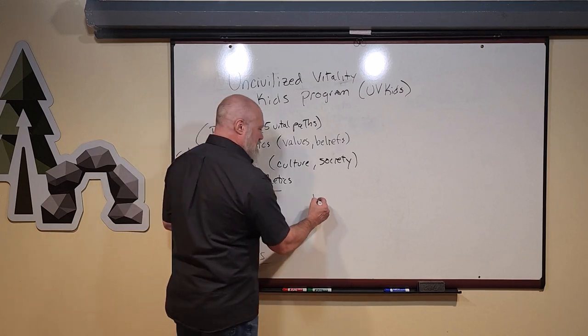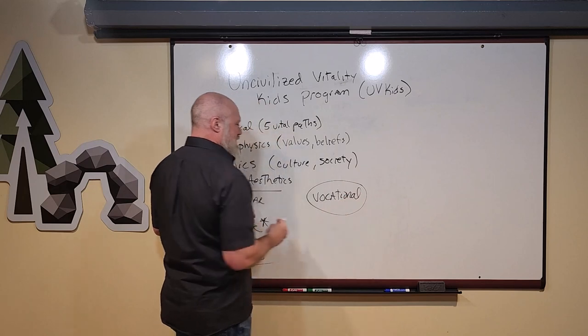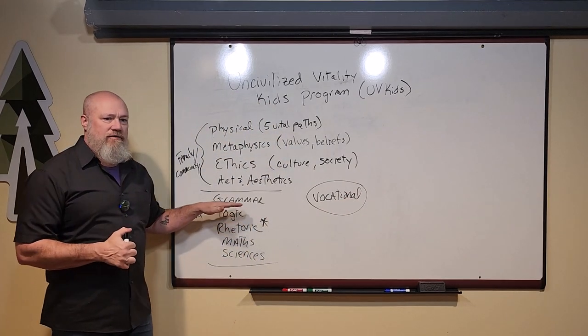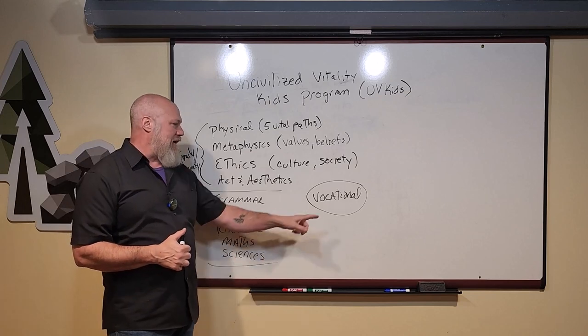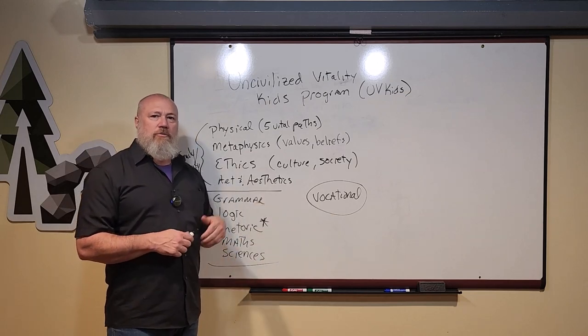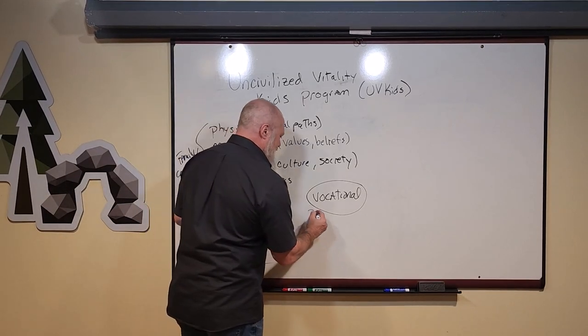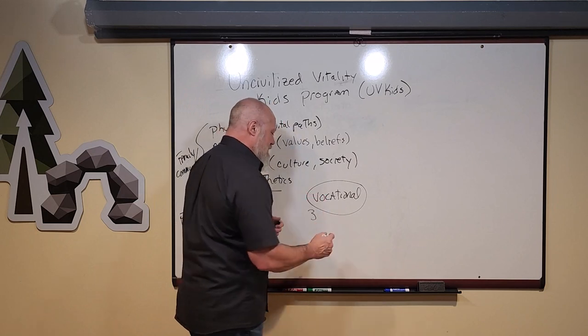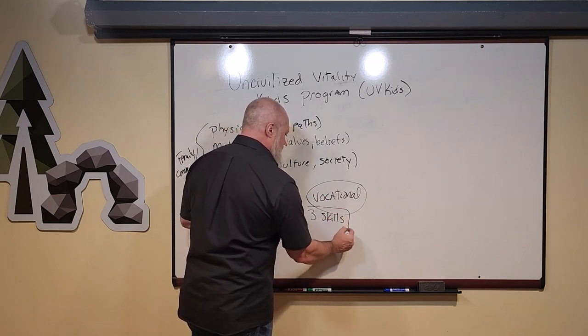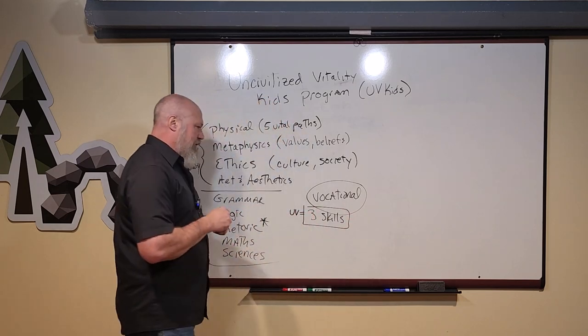And then something else that's missing as far as an education goes, maybe the 10th order. Once you've reached a certain age and you've attained enough levels of formal education, it's time to start thinking vocational education. What are you going to do for the rest of your life to earn a living or to manage a living? Uncivilized vitality teaches that our premise is three skills, right?